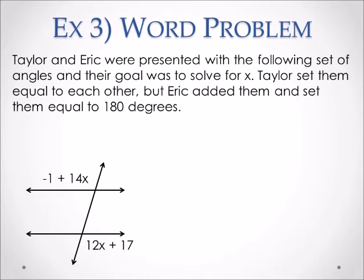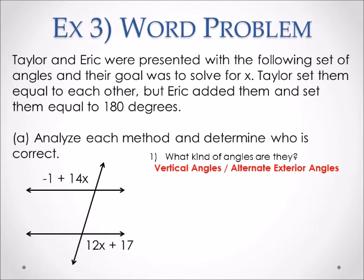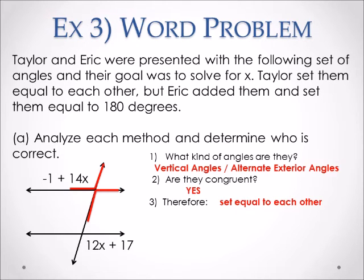Now our final example — a word problem. Taylor and Eric were presented with a set of angles and their goal was to solve for X. Taylor set them equal to each other, but Eric added them and set them equal to 180 degrees. First, identify what kind of angles they are: they are alternate exterior angles, and you can also see that they are vertical angles. Vertical angles and alternate exterior angles are congruent, so you should set them equal to each other. Therefore, Taylor is correct.